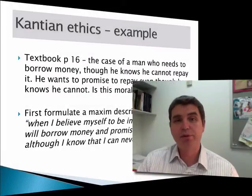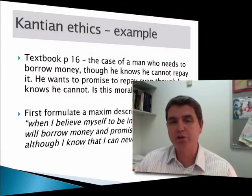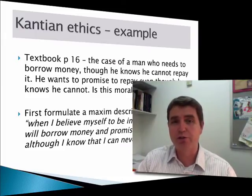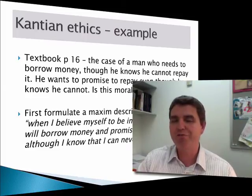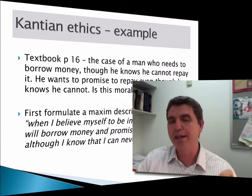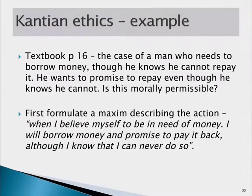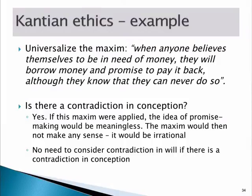Let's deal with a specific example to help understand this approach. Imagine someone wants to borrow money but knows he won't be able to pay it back. So is it okay to borrow that money knowing full well you can't repay it — implicitly lying when you take the loan? Our first step is to formulate a maxim describing the action: 'When I believe I need money, I'll borrow it and promise to pay it back even though I know I can't.' That's the specific behaviour. The next step is to universalise it.